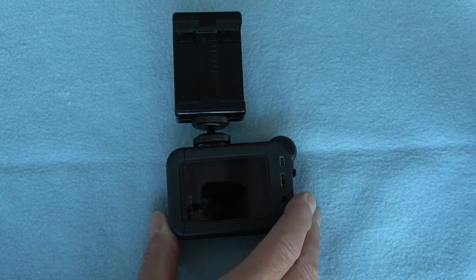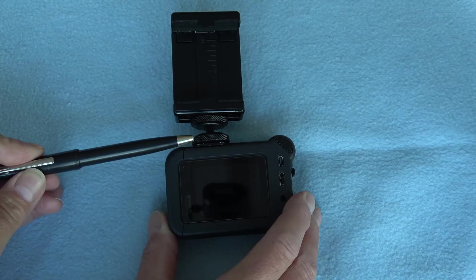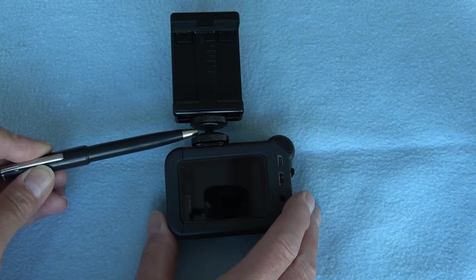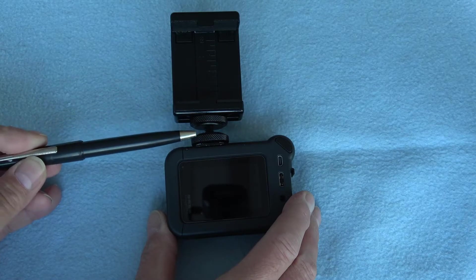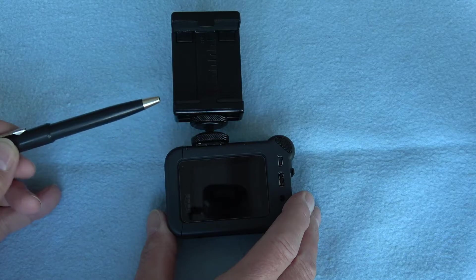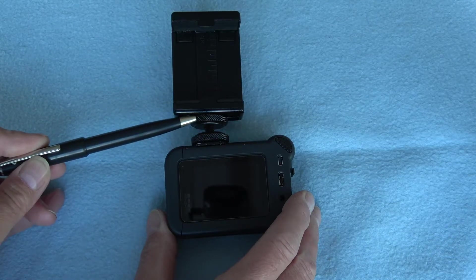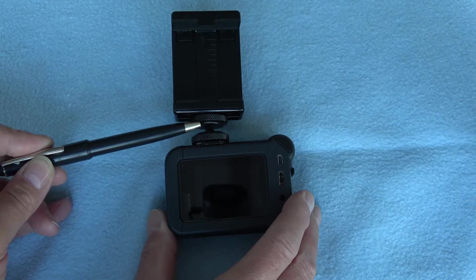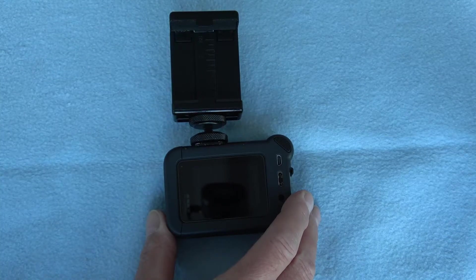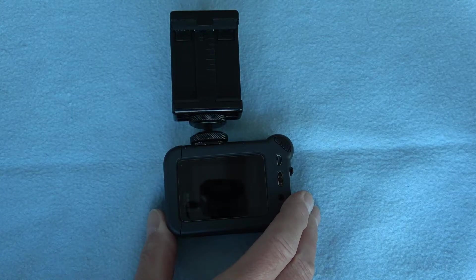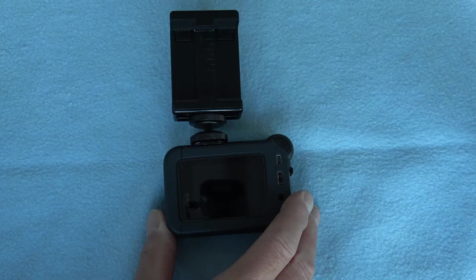This is the first part of the setup. So what we have here is the cold shoe quarter-twenty adapter or mount. The first part of the clamp here is clamped down onto the GoPro and the second part of the clamp is actually clamped up nice and tight against the phone holder or the phone clamp. So that is all nice and tight. So I am sure you can actually see where this is leading.